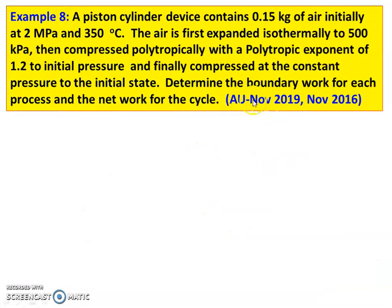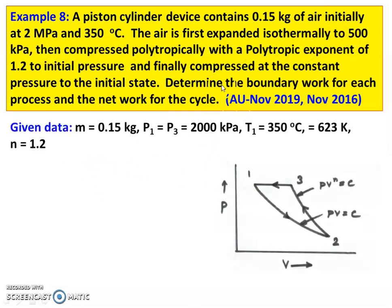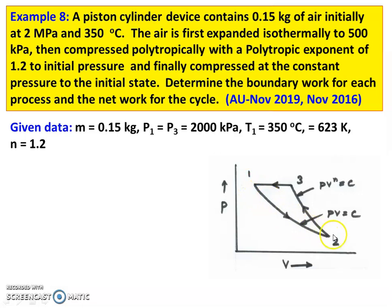Next problem, example number 8, from November 2019 and November 2016 question papers. A piston cylinder device contains 0.15 kg of air initially at 2 megapascal and 350 degree Celsius. The air is first expanded isothermally to 500 kilopascal — process 1 to 2, PV equal to constant. Then compressed polytropically — process 2 to 3, PV to the power N equal to constant. Finally compressed at constant pressure to the initial state — process 3 to 1. Determine boundary work for each process and the net work of the cycle.